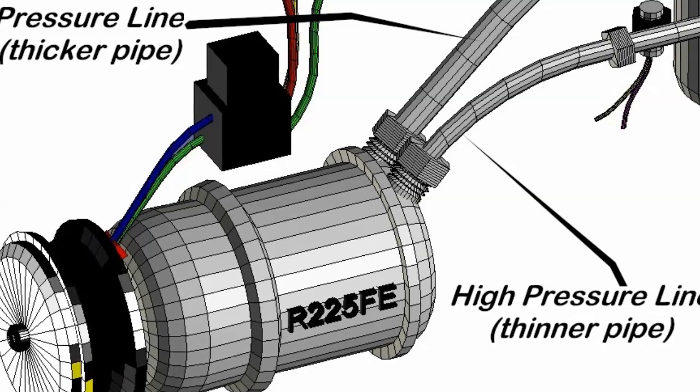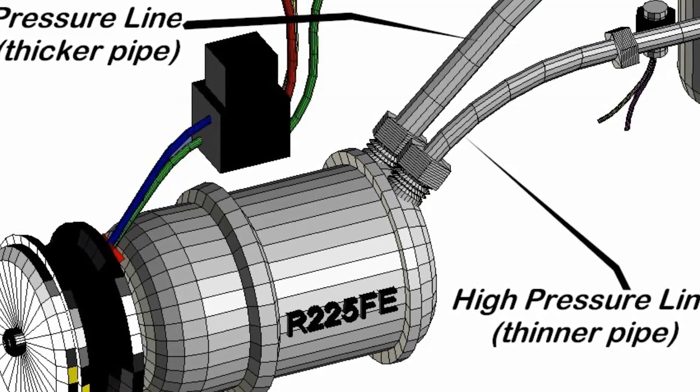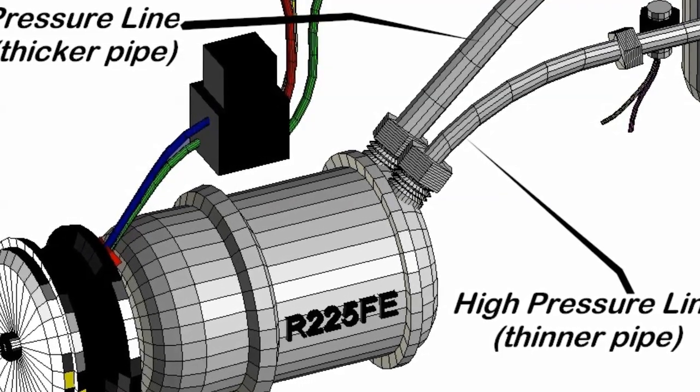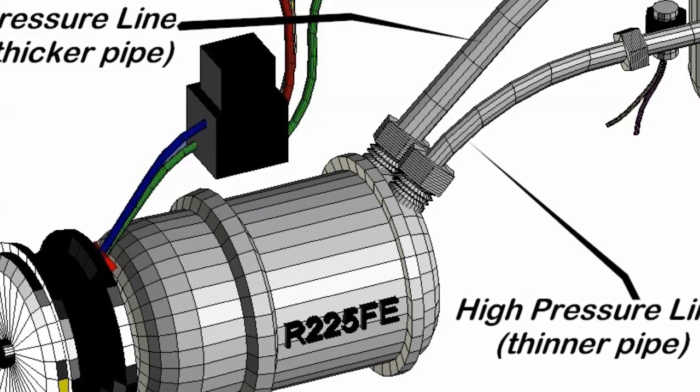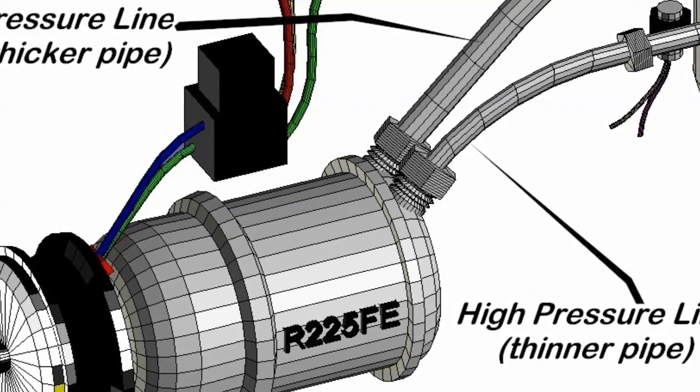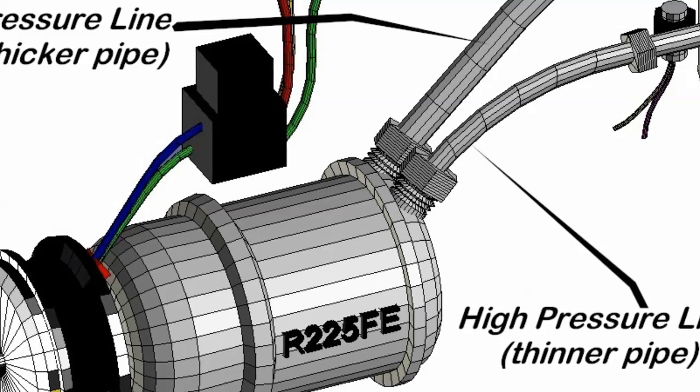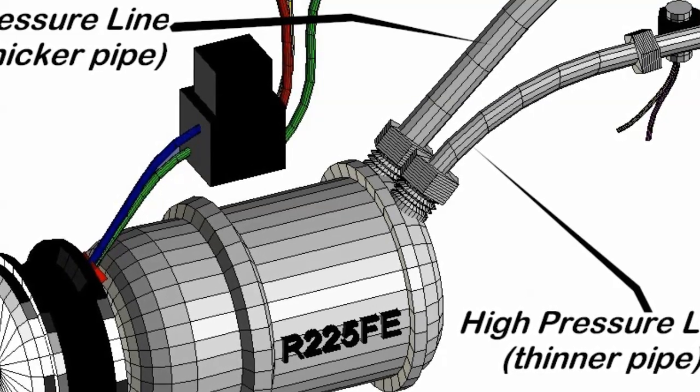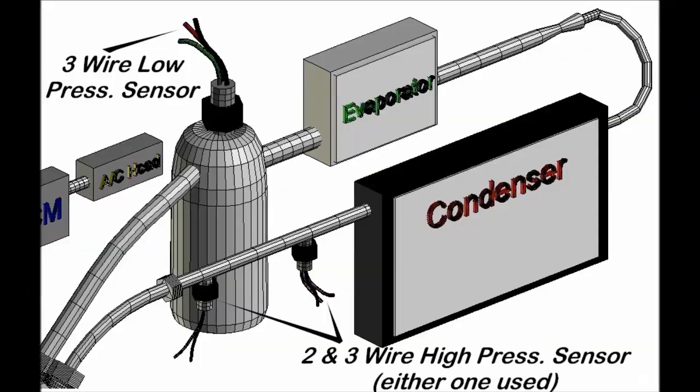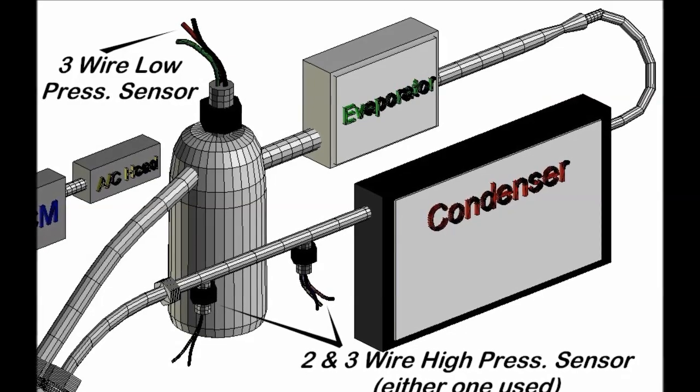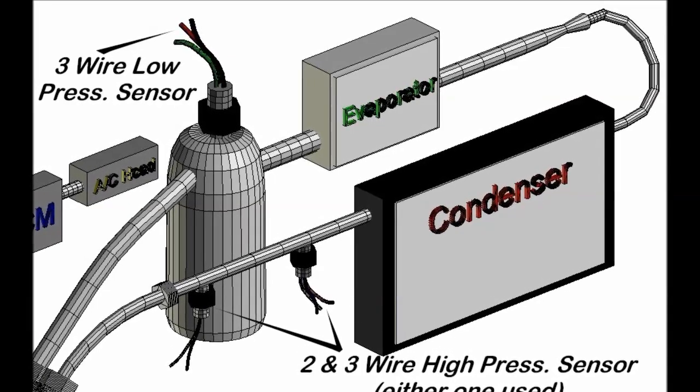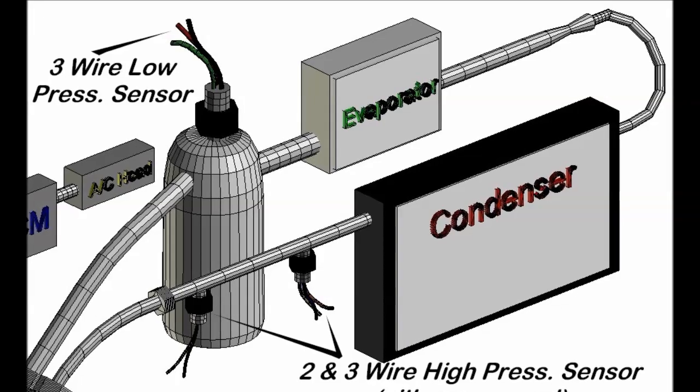You understand that it's a liquid when it goes to the compressor. You have two lines, a thicker one and a thinner one. The thinner one is coming from the condenser, which is liquid, and it turns into compressed on the other side. This is the one that goes into the expansion valve.